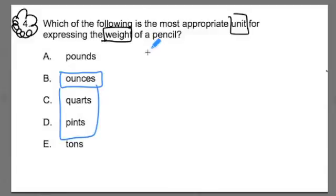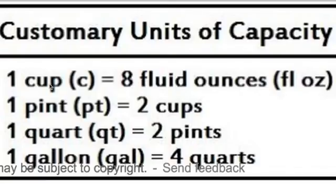First let's look at units of capacity. Eight fluid ounces equals one cup or two cups equal a pint. That would be 16 fluid ounces equals a pint. Or two pints equal a quart. That would be 32 fluid ounces equal a quart. Or four quarts equal a gallon or 128 ounces equal a gallon.